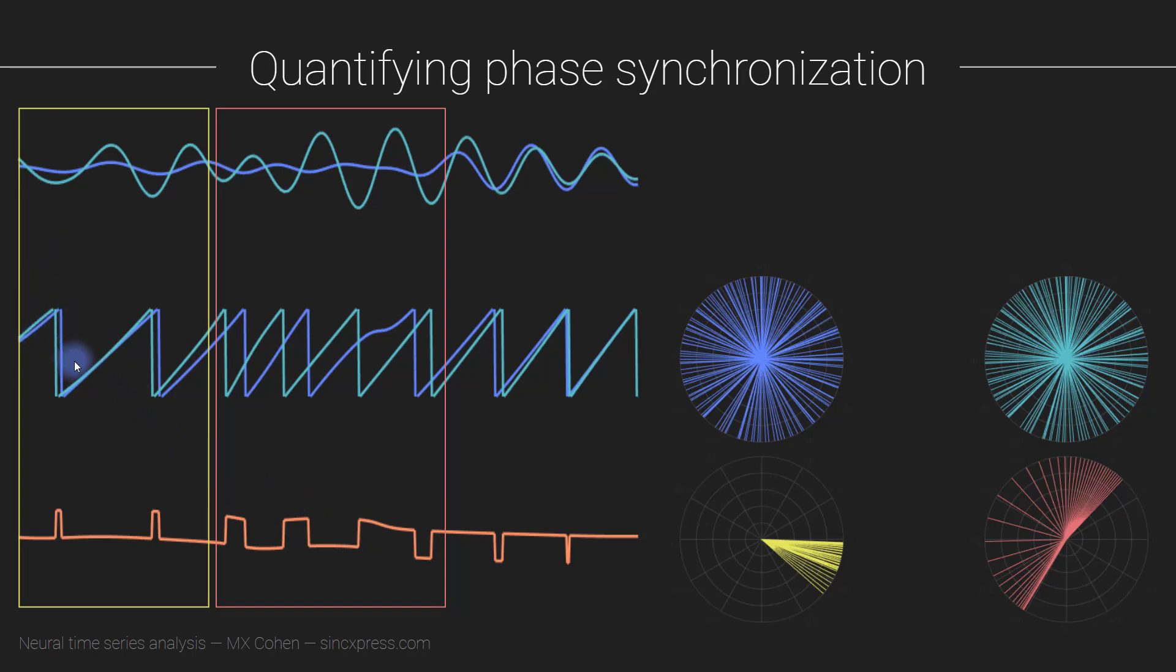For example, you might find that in this window here, where visually you see that there is strong synchronization, the phase angle time series are really strongly clustered. The phase angles themselves are individually for each channel distributed basically uniformly all throughout the phase space. But when you subtract these, you see that their difference is very consistent.